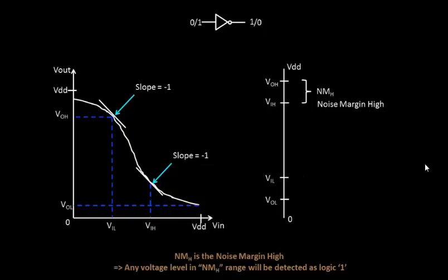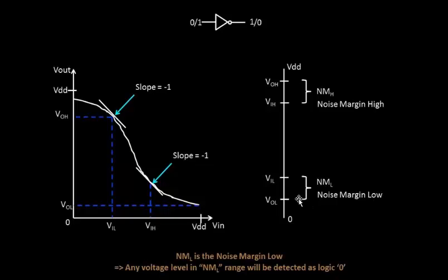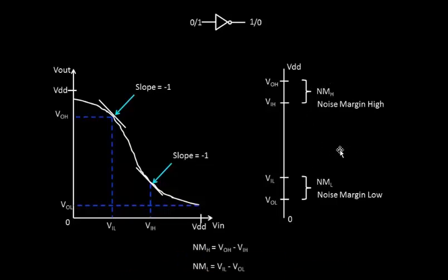Next we have the range for logic 0. NML is the noise margin low. It says any voltage level which lies in the range of VOL to VIL, whether at the input or output side, will be detected as logic 0. The equations are simple: noise margin high is VOH minus VIH, and noise margin low is VIL minus VOL.